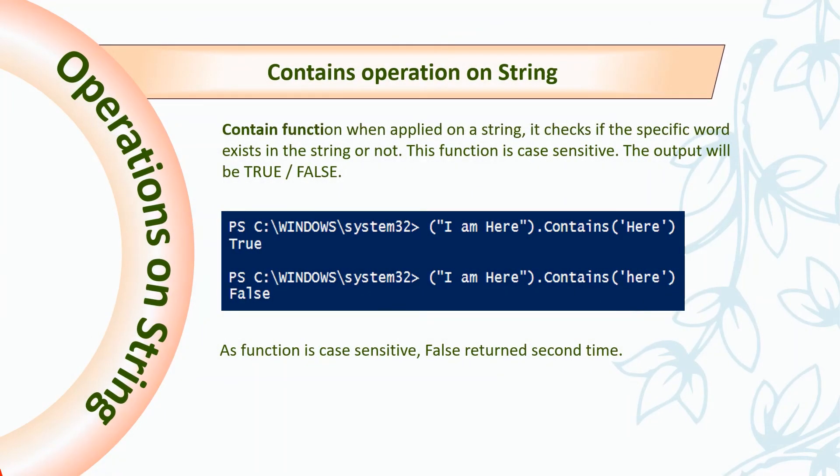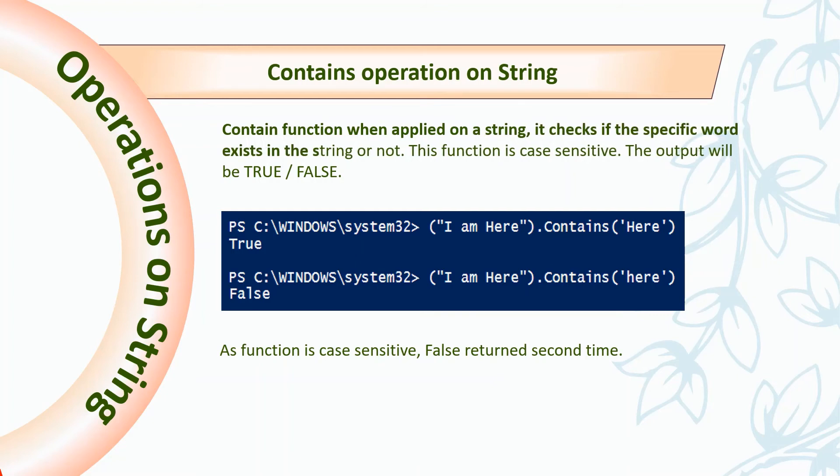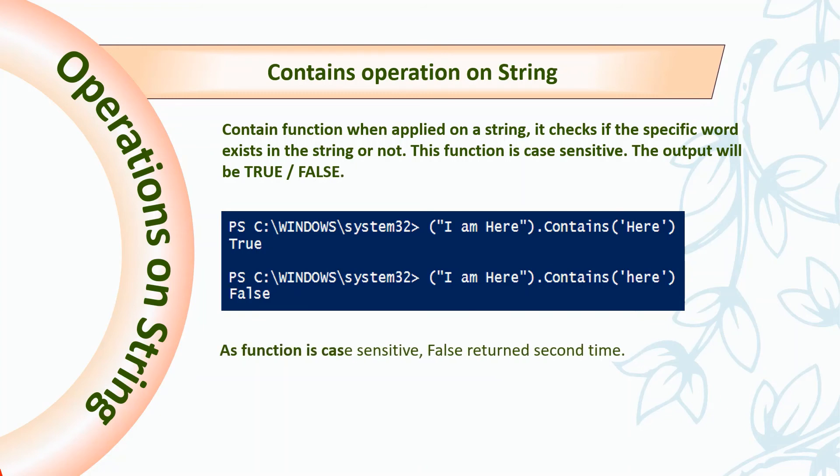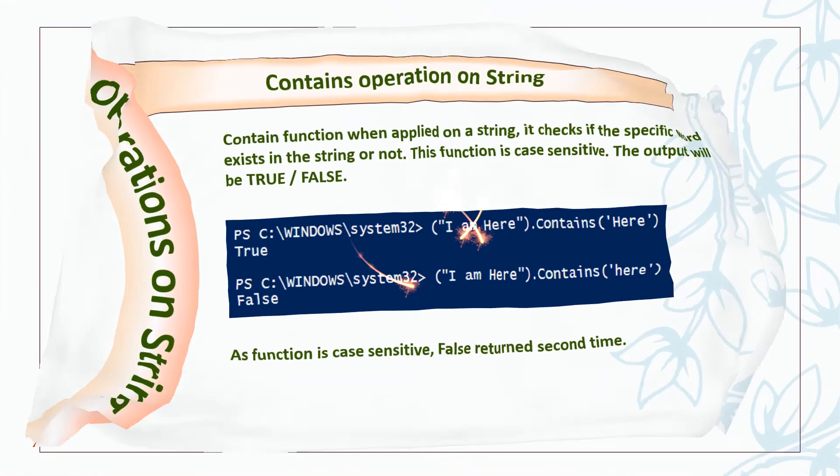Next operation is contains. Contains function when applied on a string checks if the specific word exists in the string or not. This function is case sensitive. The output will be true or false. As you can see in the second statement, it returned false because it's a case sensitive function.